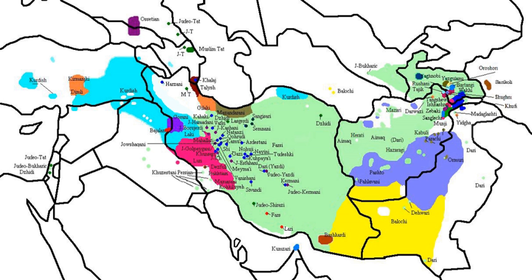The normal word order is subject-object-verb. Like many other Indo-Iranian languages, Balochi also features split ergativity. The subject is marked as nominative, except in past tense constructions where the subject of a transitive verb is marked as oblique and the verb agrees with the object.